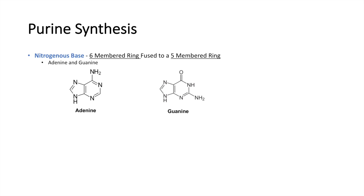Here are the structures for adenine and guanine. As you can see, the main difference between purines and pyrimidines is that purines are six-membered rings fused to a five-membered ring, whereas pyrimidines are just six-membered rings. As I mentioned before in the pyrimidine synthesis video, pyrimidines are easy to remember by the mnemonic 'CUT the pyramids' — C-U-T. So think about that if you're ever confused about what is a purine and what is a pyrimidine.